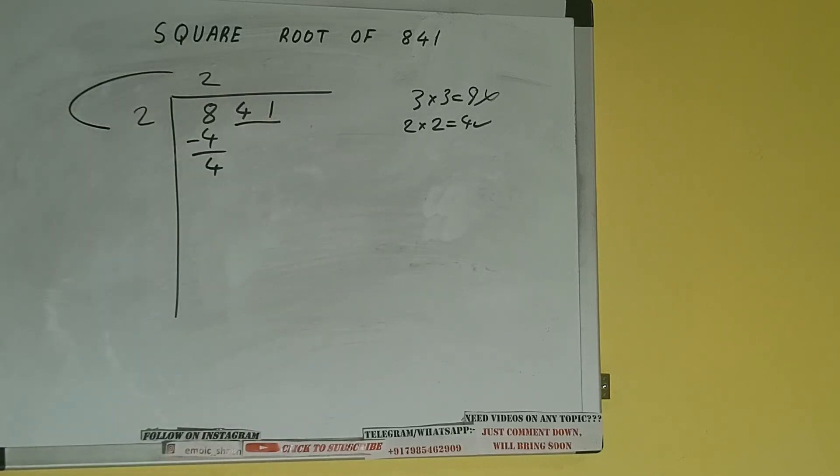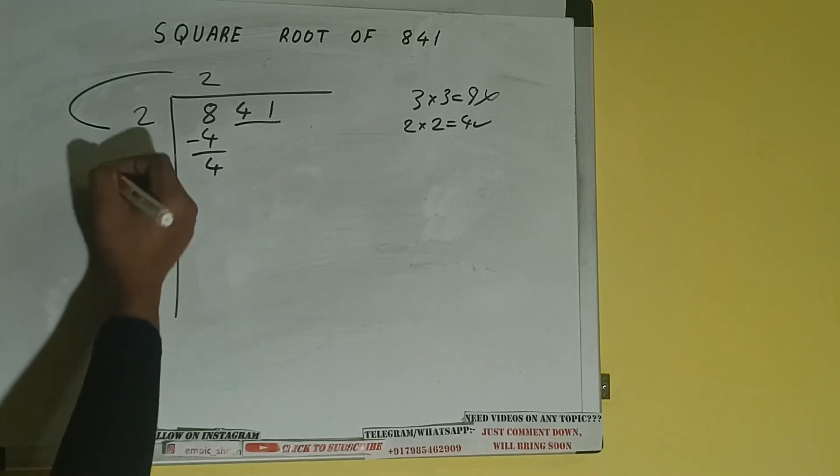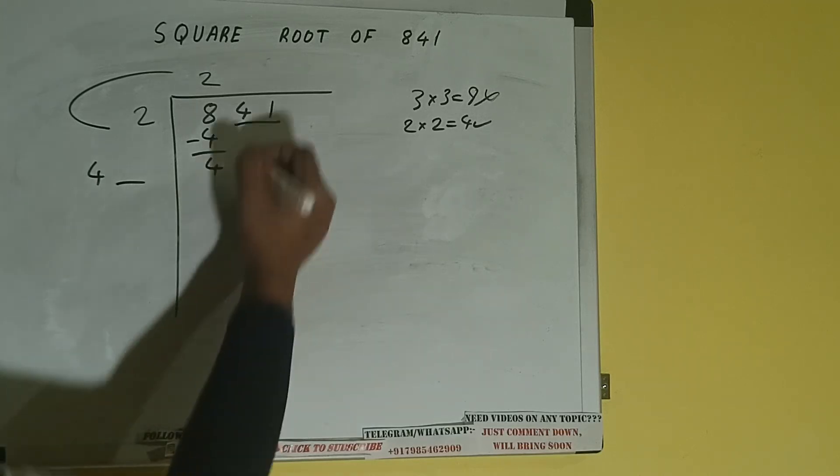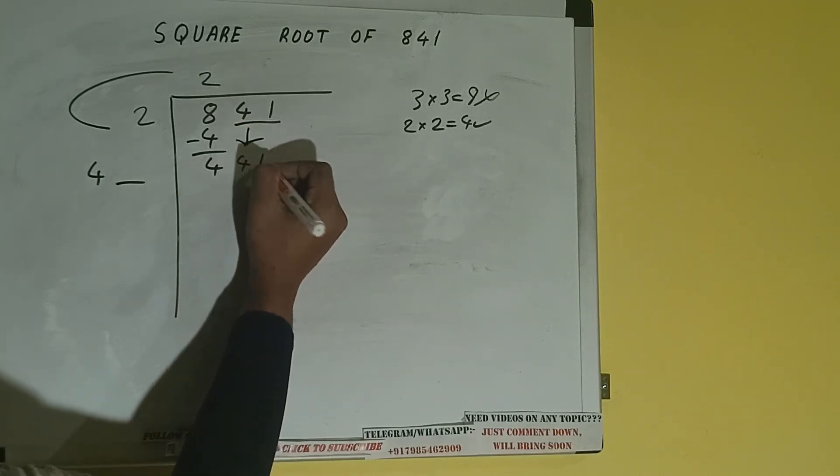We did 2 times 2, so add both. 2 plus 2 will be 4. Write it here and keep a digit extra, and this number we need to make it big. So bring the next pair down and it will be 441.